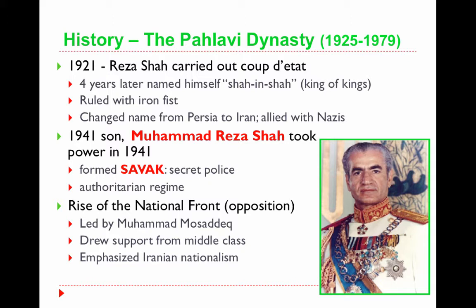Reza Shah changed the name of the country from Persia to Iran. He industrialized the country, built national railroads, built modern factories, and took land away from the elites. He also began to change the religious character of Iran — he removed the law requiring women to wear veils and closed religious schools, effectively reducing the influence of Islam in the country. In 1941, he was forced to abdicate because he had allied himself with the Nazis during World War II.